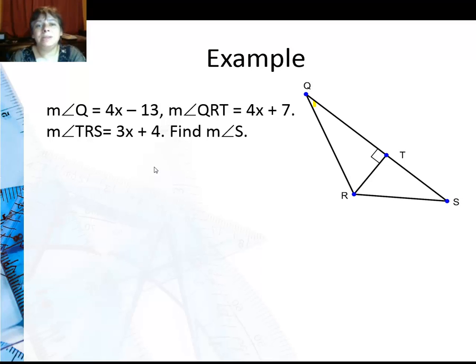In this example, I know that measure of angle Q and QRT and TRS, and I'm trying to find the measure of angle S. The first thing I notice is that Q and QRT are both in the same triangle, and I know that one's 90. So I know automatically that all three angles have to add up to 180.